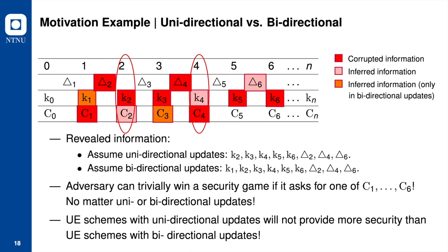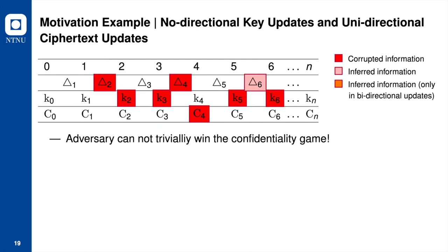This means that UE schemes with unidirectional updates don't provide more security than UE schemes with bidirectional updates. Then we look at the same corruption scenario but in the no-directional key update setting with unidirectional ciphertext updates. In this example, the adversary cannot trivially win the confidentiality game — recall that the adversary could trivially win with this action if the update setting was uni or bidirectional. This implies that security notions with no-directional key updates are strictly stronger.